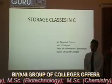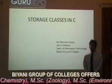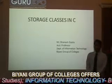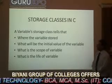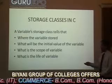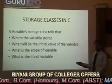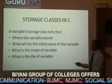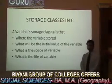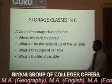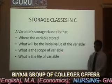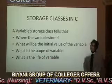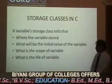We know all variables have a data type, but they also have storage classes. There are basically two kinds of locations in a computer to store a variable value: in memory or in CPU registers. A variable's storage class tells where the variable is stored, what will be the initial value of the variable if we don't assign a value — whether it is garbage or something else — what is the scope of the variable, and what is the life of the variable throughout the program.